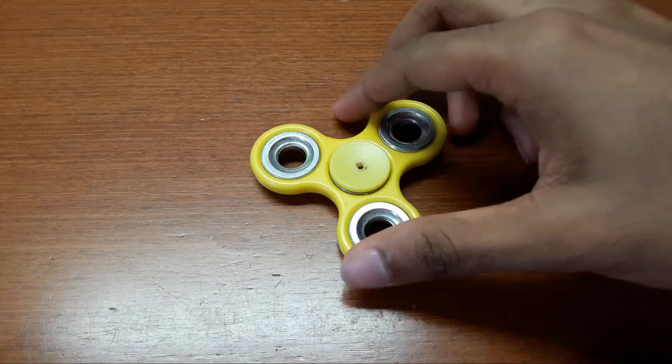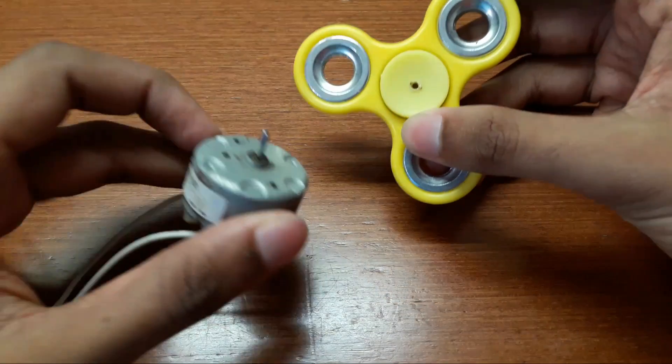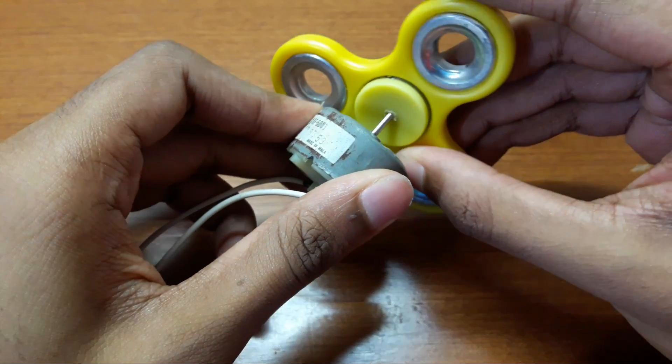The hole you have made in the center of the fidget spinner should be big enough to fit in the DC motor.